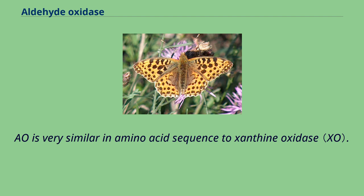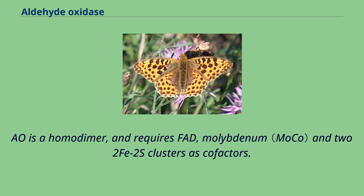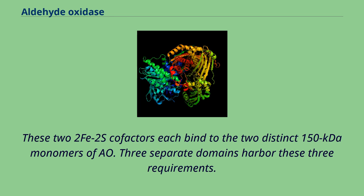Aldehyde oxidase is very similar in amino acid sequence to xanthine oxidase. The active sites of aldehyde oxidase have been found to have a superimposed structure to that of xanthine oxidase, in studies involving mouse liver. Aldehyde oxidase is a homodimer and requires FAD, molybdenum, and 2Fe-2S clusters as cofactors. These 2Fe-2S cofactors each bind to the two distinct 150kDa monomers of aldehyde oxidase.